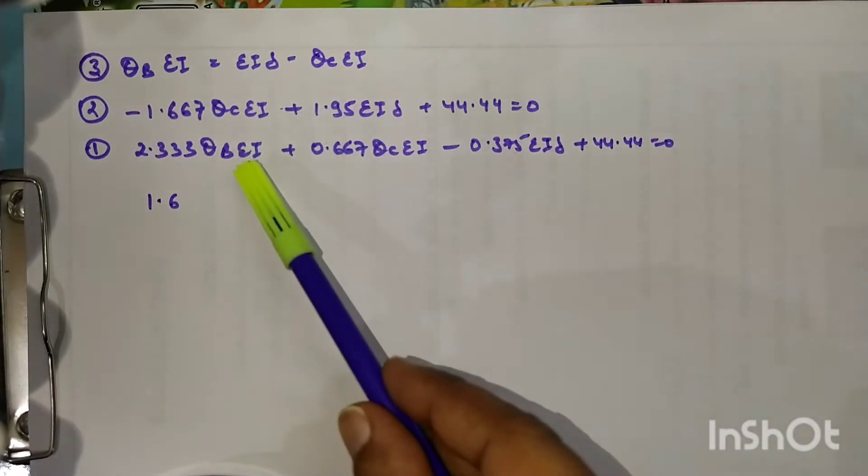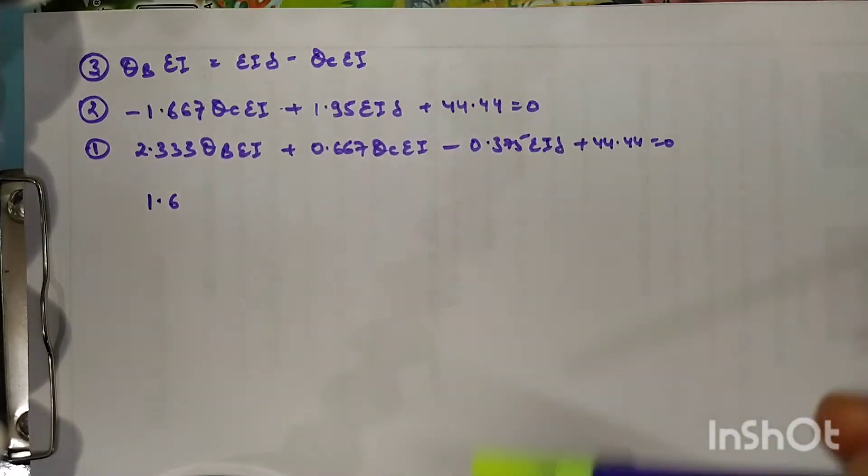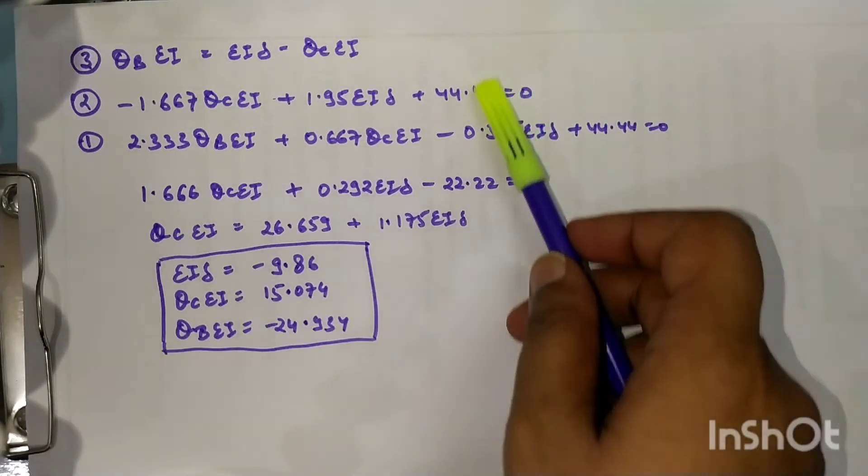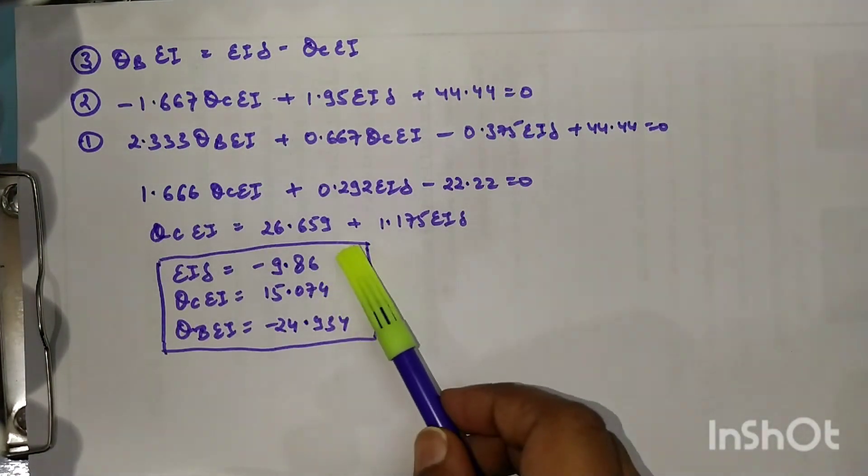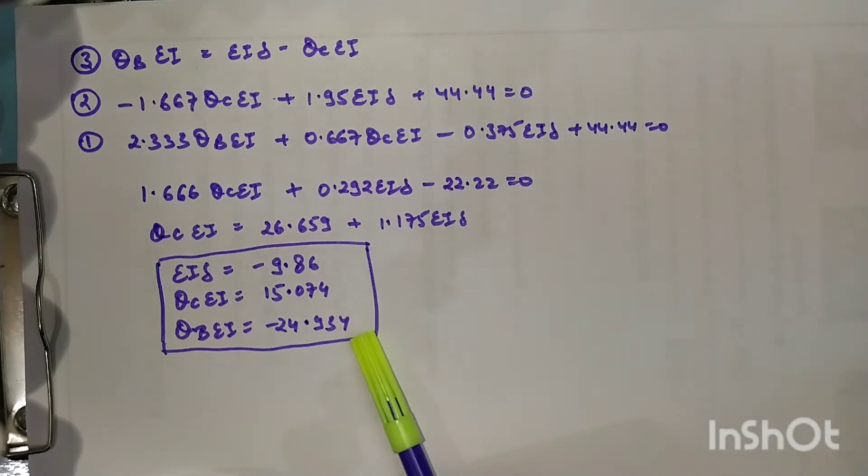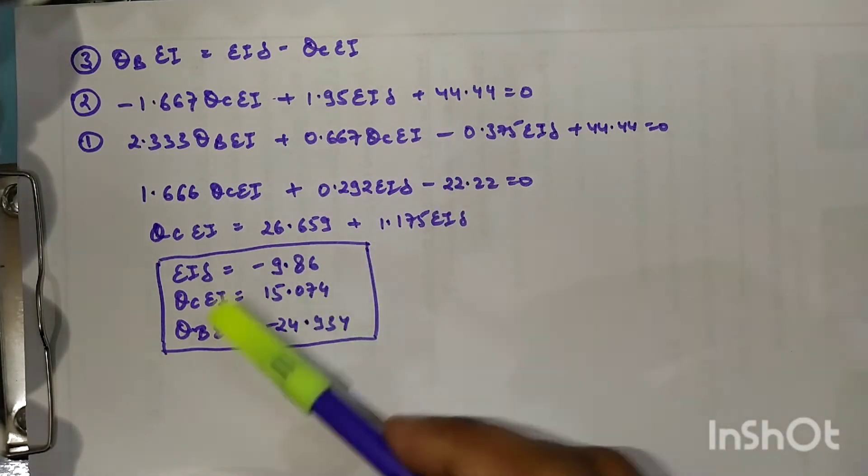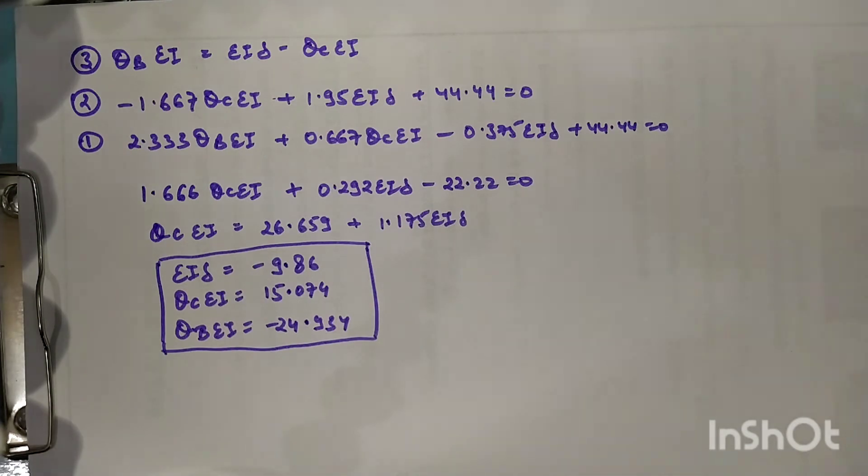So these are the main equations we got after substituting. We got the value of delta, theta C, and theta B. In this format we have to simply put this in the main equation.